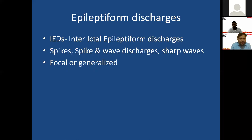In a normal outpatient setting, if someone has a doubtful seizure and we want to know whether it is epilepsy, we order EEG to pick up interictal epileptic form discharges — because if they are present, that is a clue it could be epilepsy. These discharges may appear as spikes, spike-and-wave discharges, or sharp waves. They can be focal (restricted to one area) or generalized (diffuse across the entire brain).